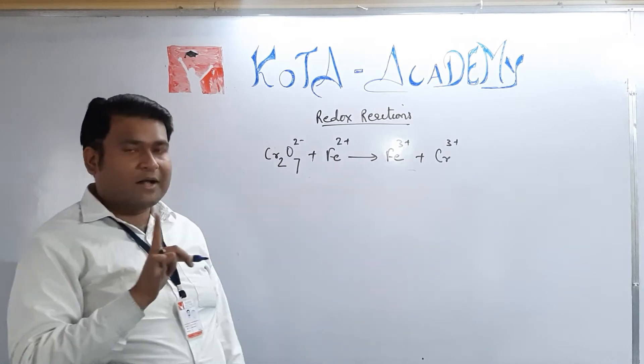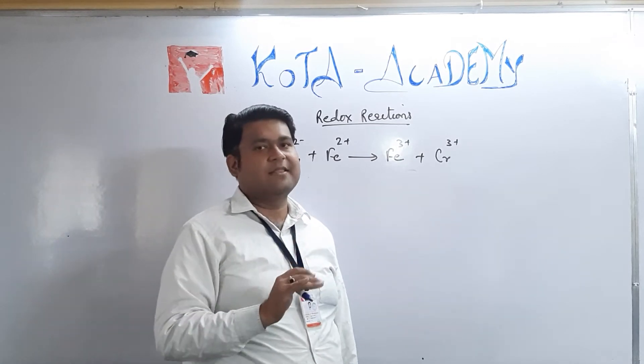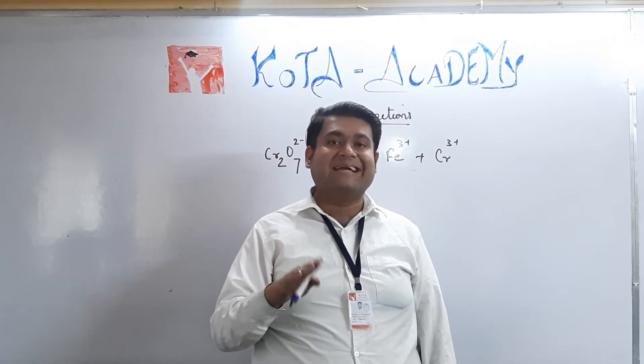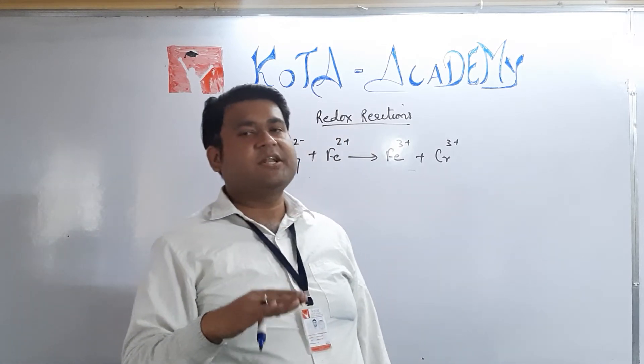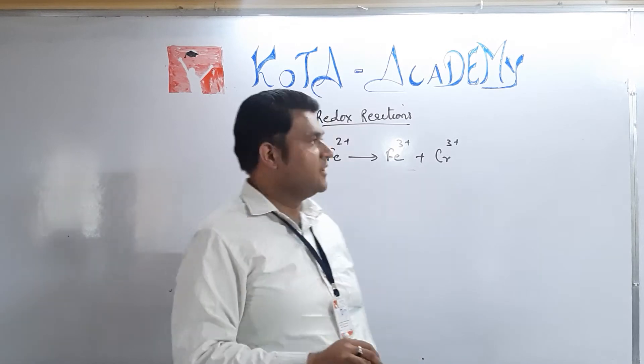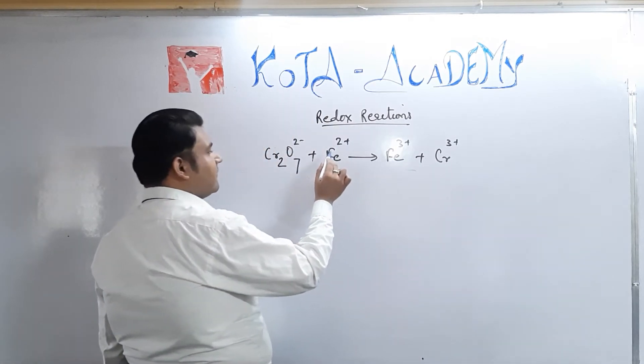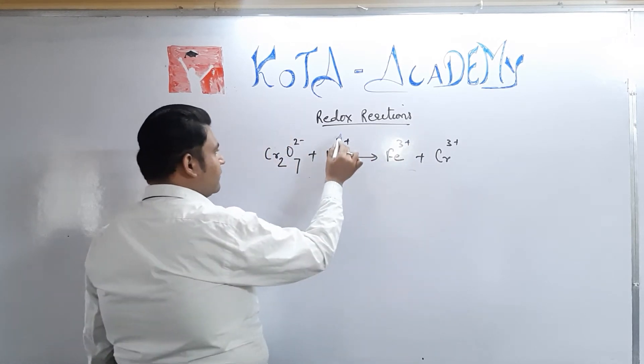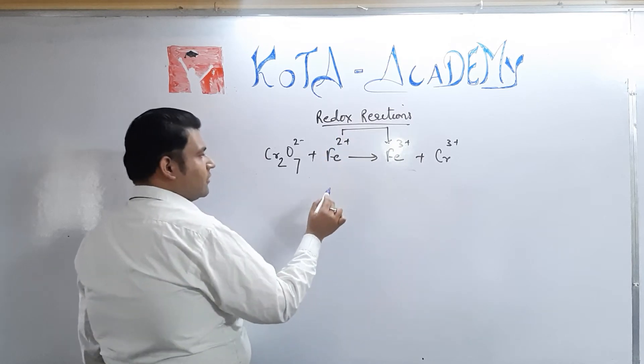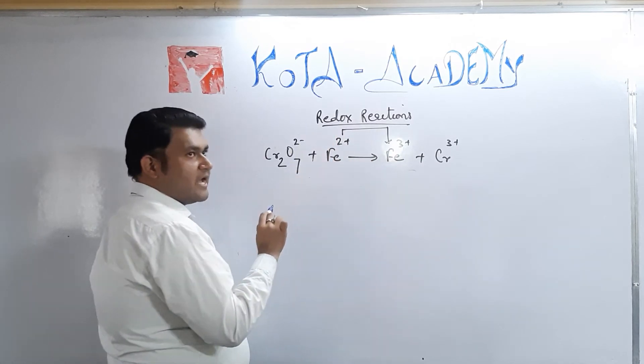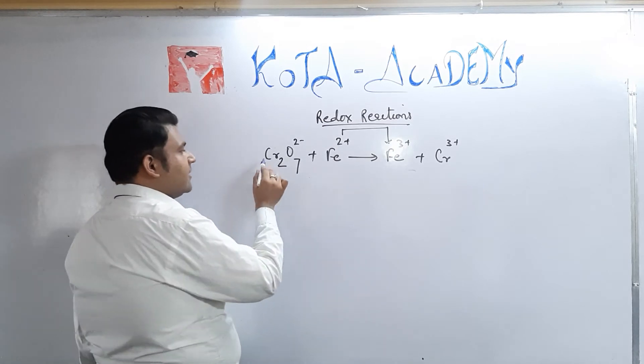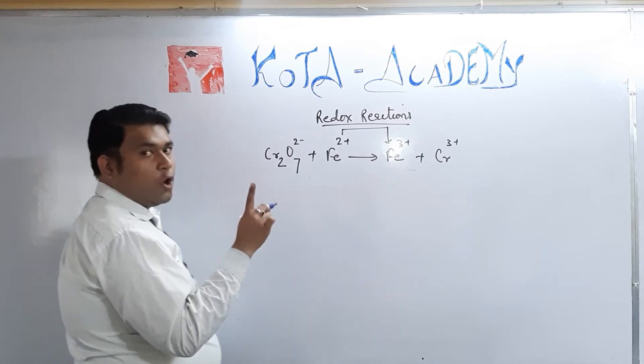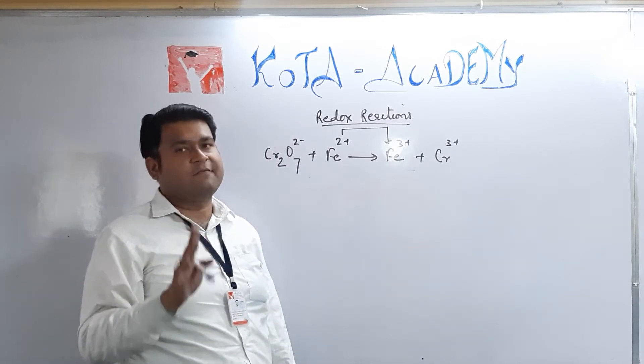We must be knowing one more thing before balancing this reaction. That oxidation is also referred to as increase in oxidation state and reduction is also termed as decrease in oxidation state. So here we can see that the oxidation state of Fe2+ is +2 and Fe3+ is +3. So there is an increase of oxidation number. So we can say that Fe2+ is getting oxidized to Fe3+. At the same time, Cr2O7 2- is getting reduced to Cr3+. So firstly we shall be writing the oxidation half and the reduction half of the reaction.